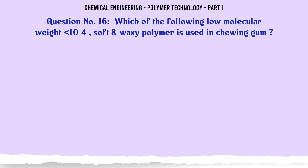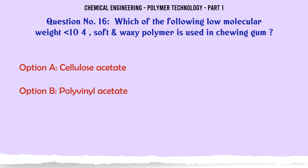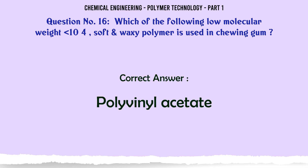Which of the following low molecular weight (10^-4), soft and waxy polymer is used in chewing gum? A. Cellulose acetate, B. Polyvinyl acetate, C. Thiokol, D. PVC. The correct answer is Polyvinyl acetate.